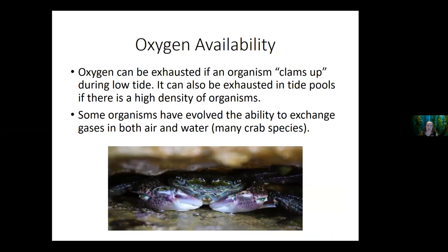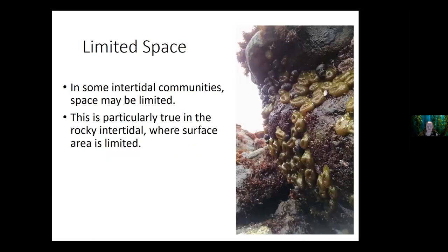Another challenge is oxygen availability. If an organism has to close up to prevent desiccation, it may not be able to get as much oxygen. Some species can exchange oxygen and other gases in both air and water, which is a great strategy if you're going to be exposed and then submerged throughout the day — many crab species can do this. Competition for space is also a challenge; you can see quite a few anemones in the picture on the right competing for space on a rock, determining who gets the more or less exposed areas, more food, and access to mates.